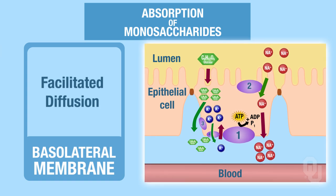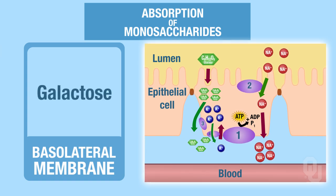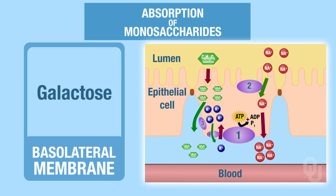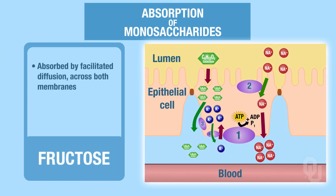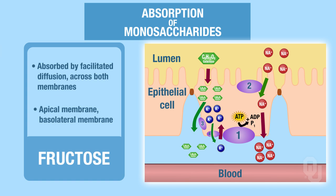That explains how glucose is absorbed—the mechanism for glucose absorption in the small intestine. Galactose absorption is exactly the same as glucose. So instead of glucose on the diagram, you could substitute galactose and it would work identically. What's different is fructose. Fructose is actually absorbed by facilitated diffusion across both membranes—the apical membrane as well as the basolateral membrane.